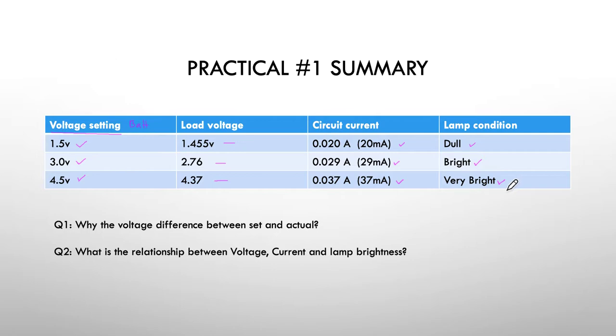So I've asked a couple of summarizing questions. Why do the voltage differences between the set and the actual... So here's our set and here's our actual. And why is there some difference here? Well, there's a couple of possibilities.